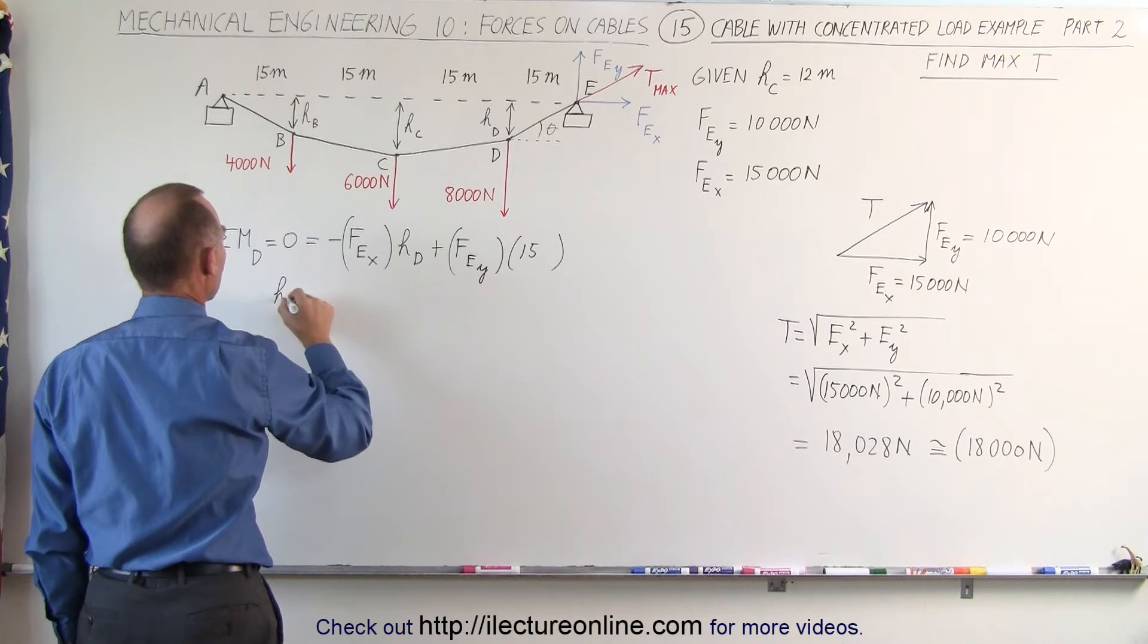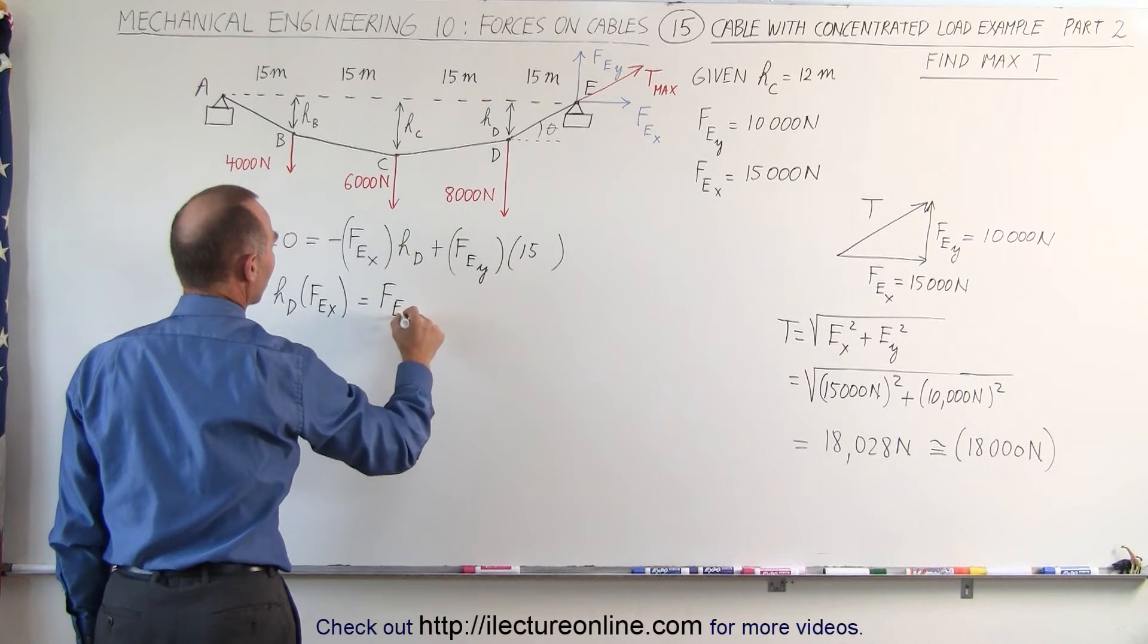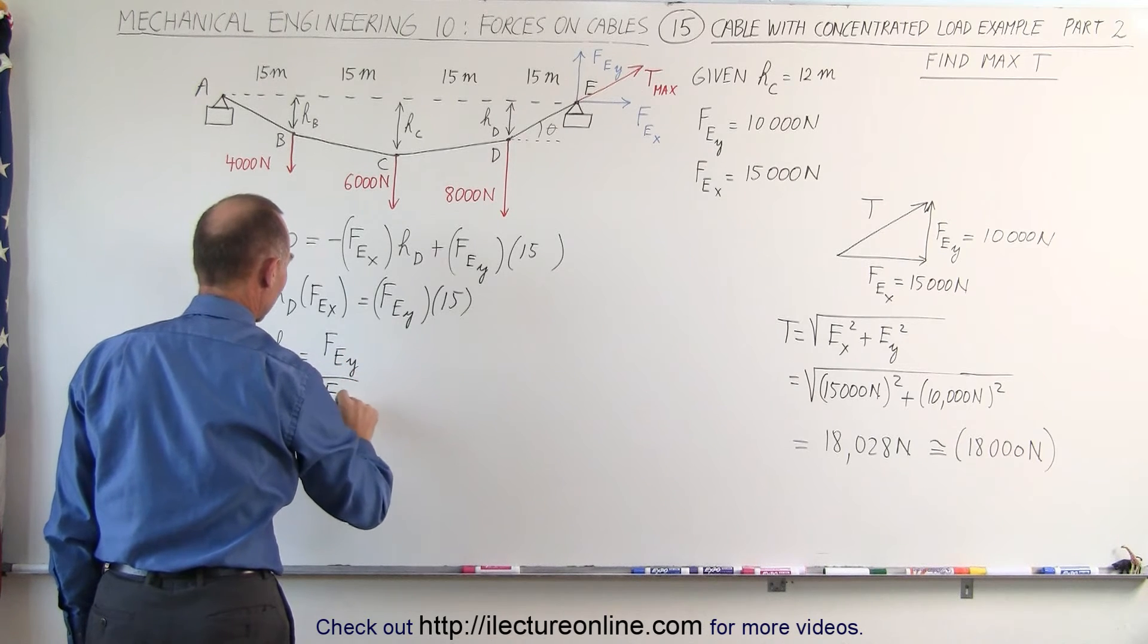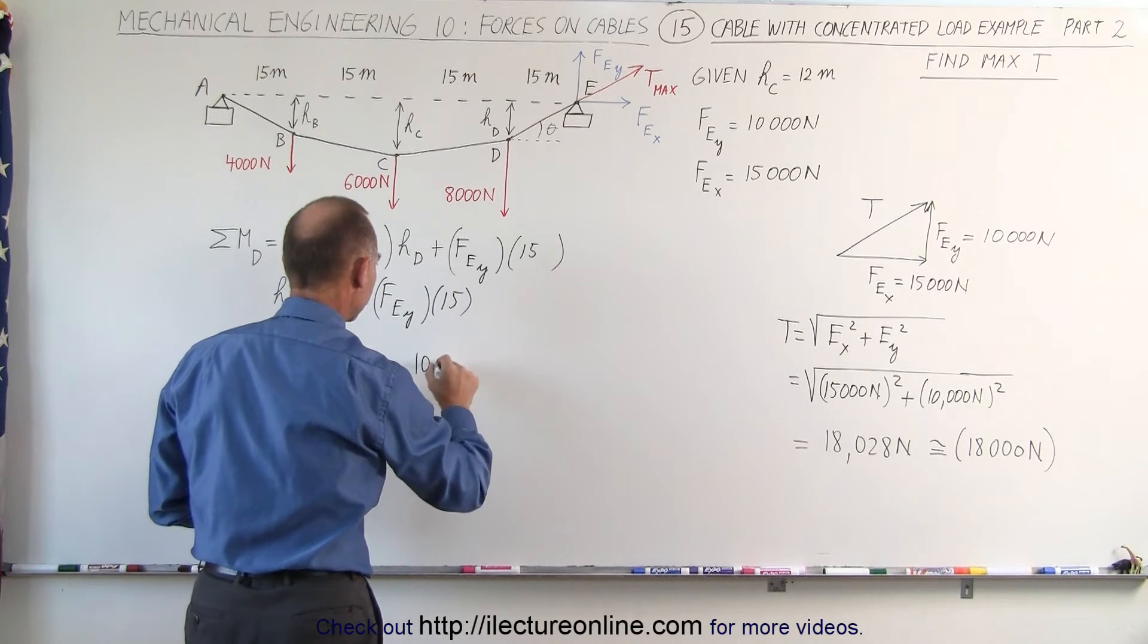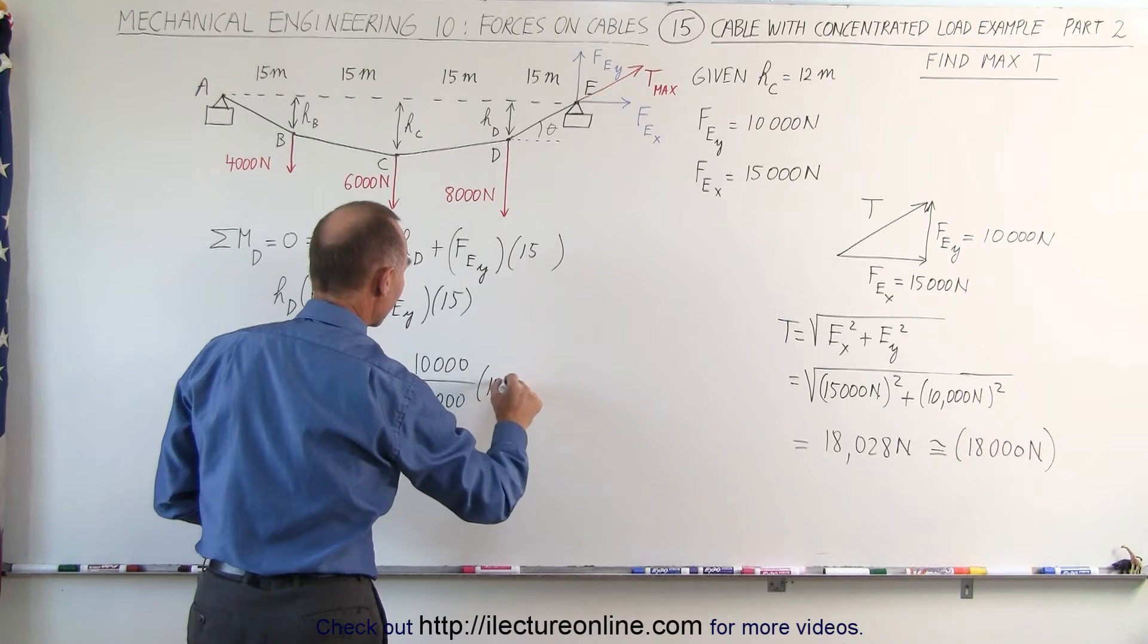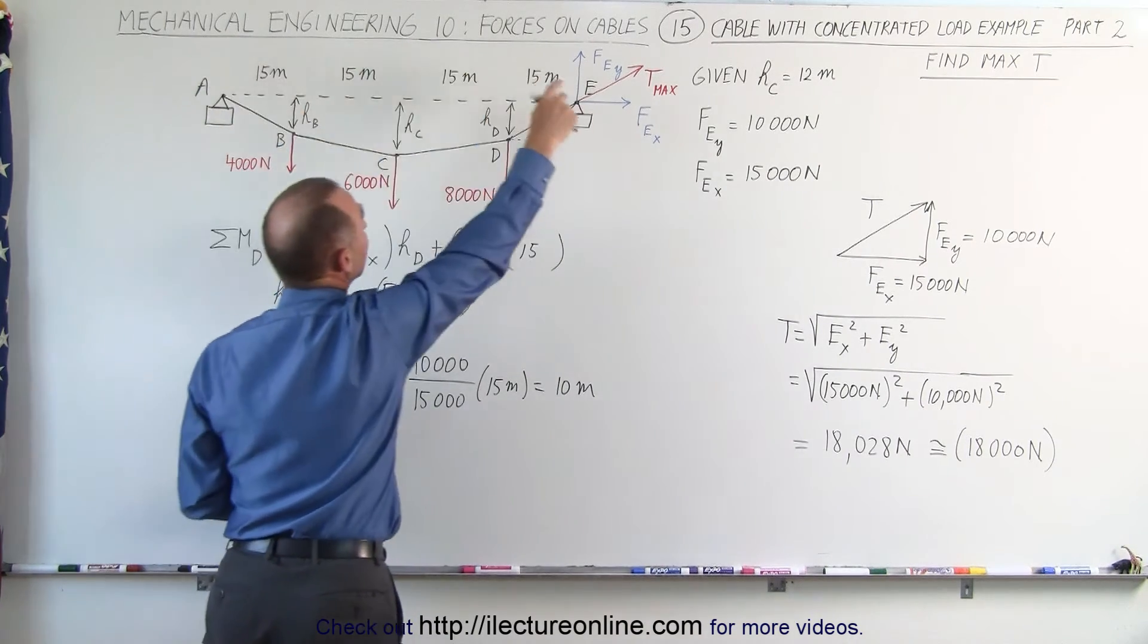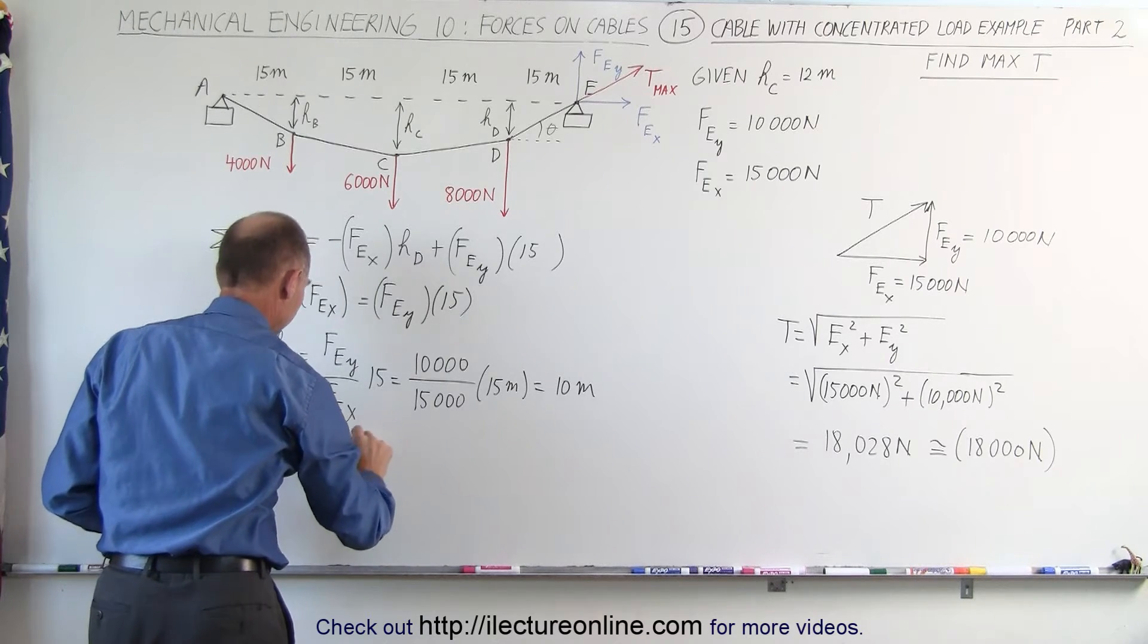Now we want to solve for HD. So we move this over here. We have HD times F E in the X direction, that now becomes positive, equals F E in the Y direction, times 15. And finally, let's say HD is equal to the ratio of F E Y divided by F E X times 15, which is F E in the Y direction, that's 10,000 divided by F E X, which is 15,000 times 15, of course, that's in meters, and that gives us two-thirds of that, which is 10 meters. In other words, the distance from the horizontal line connecting A and E to D, this vertical distance H sub D there, is equal to 10 meters. There we go.